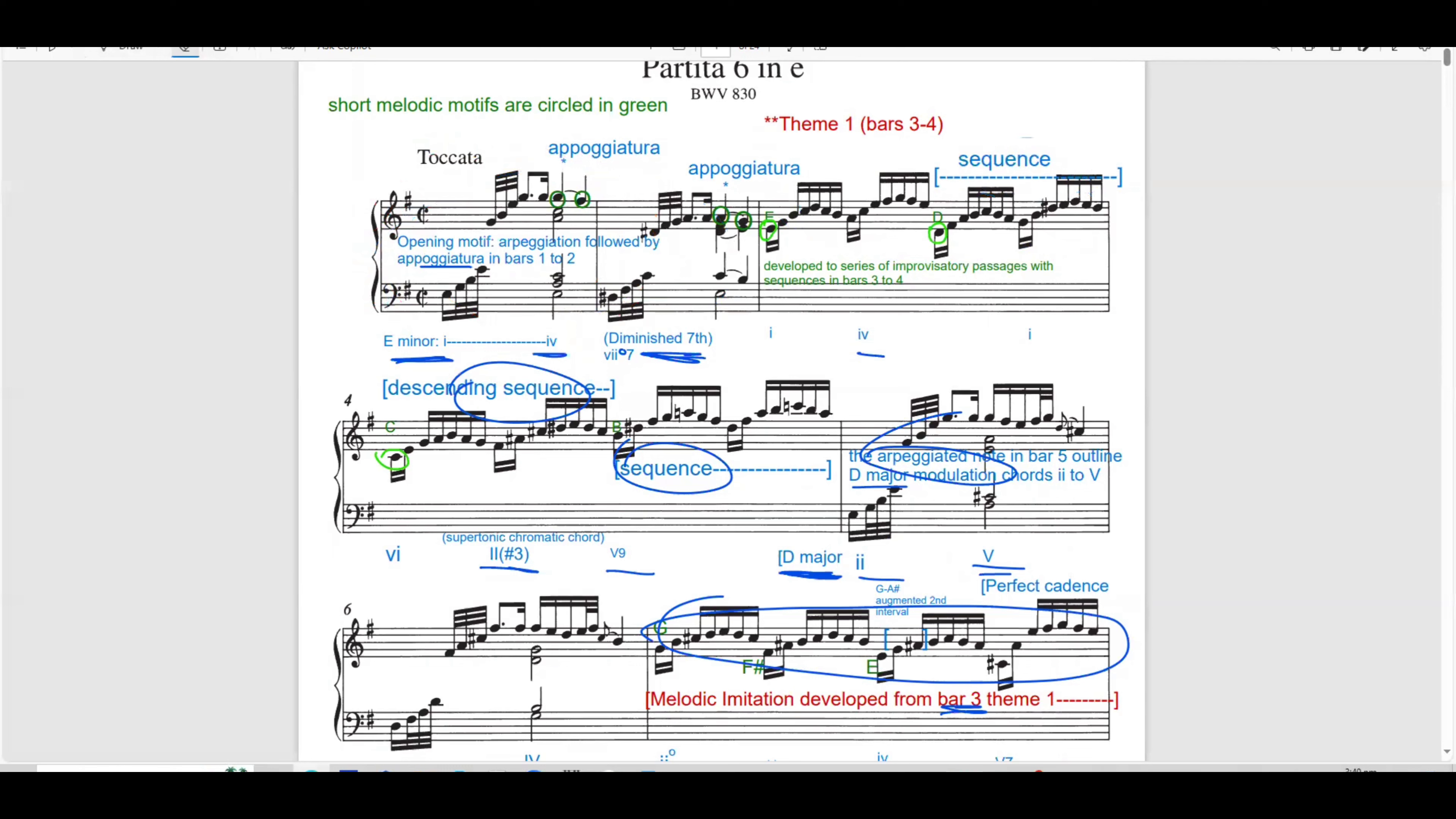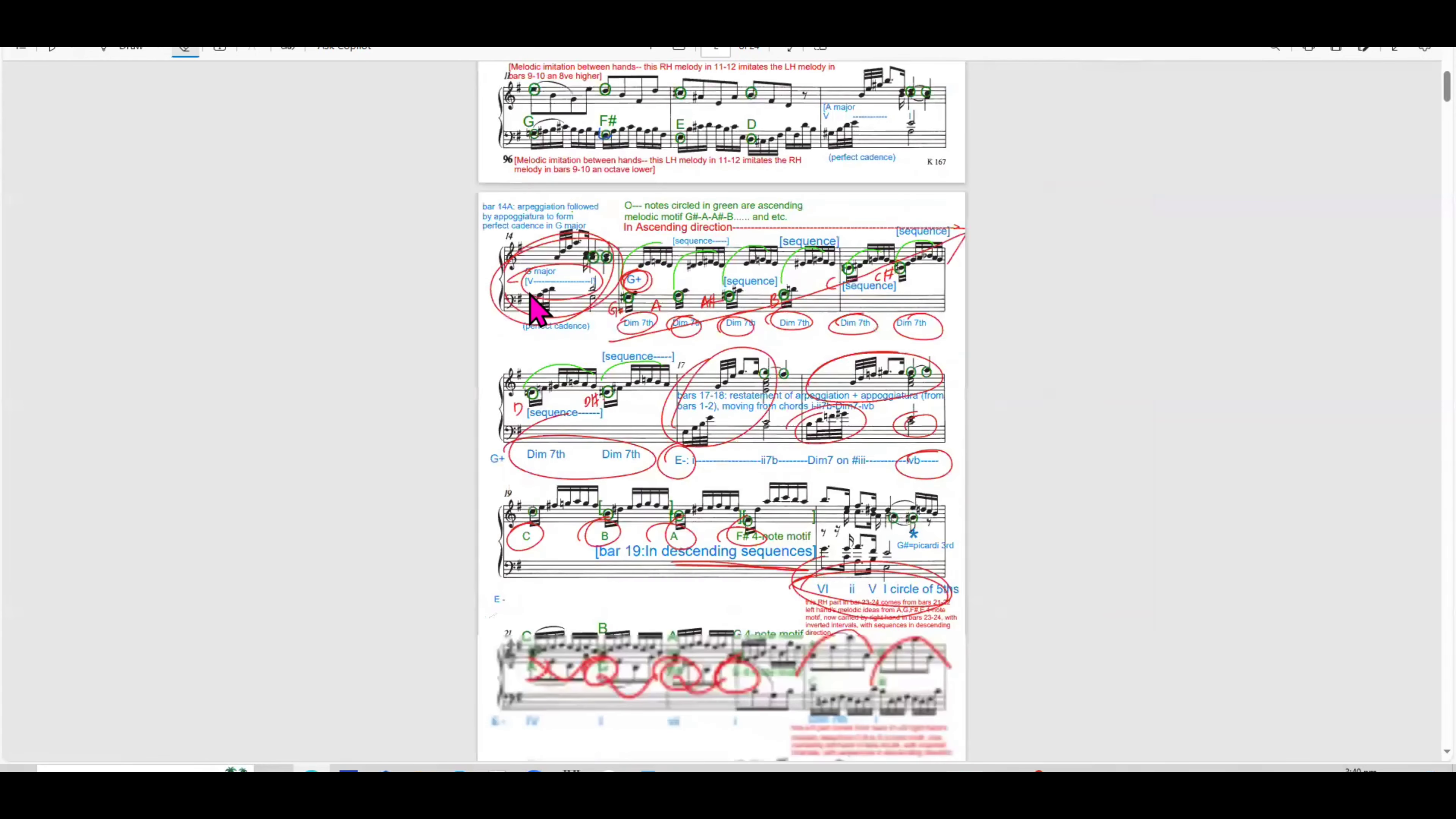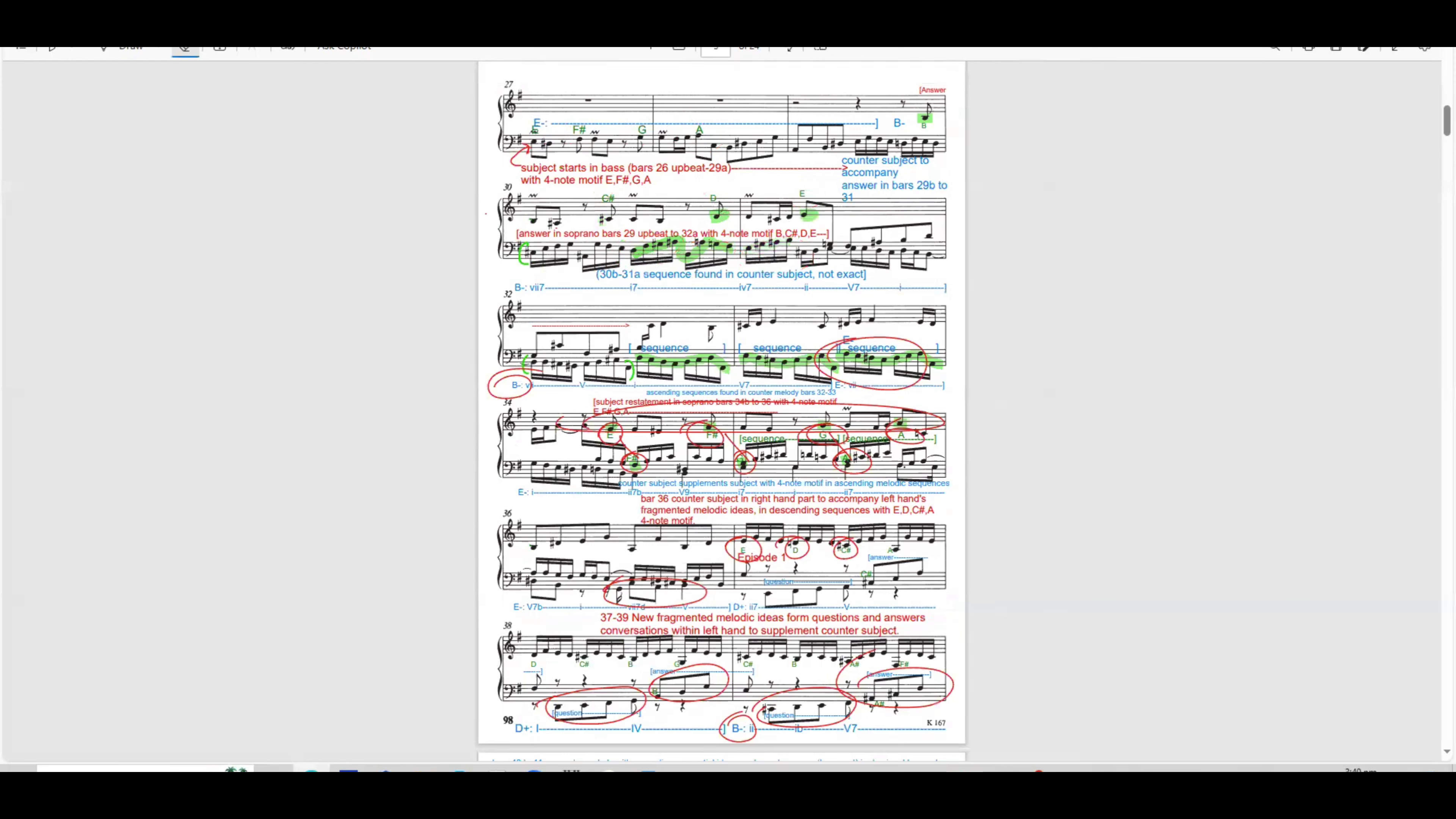These are the dialogue with the right hand top melody. The purpose of doing this is to restate the subject in soprano but reinforces the importance of motif while developing the counter subject through ascending sequences adding variety and interest to the polyphonic structure. In bar 36 to 37 the counter subject takes on a more prominent role with descending sequence that complement the subject restatement in the left hand.